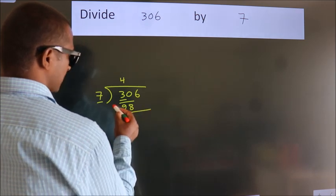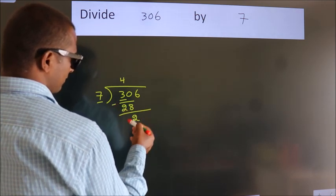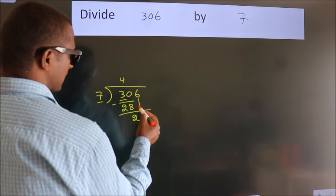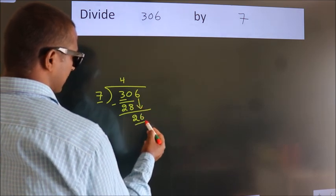Now, we should subtract. We get 2. After this, bring down the beside number. So, 6 down. So, 26.